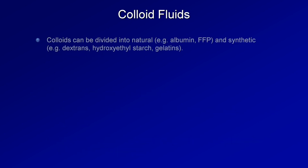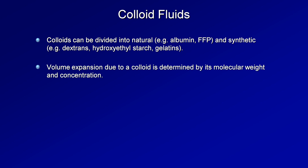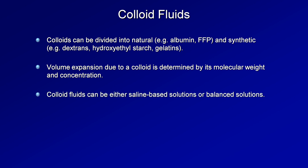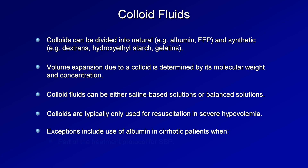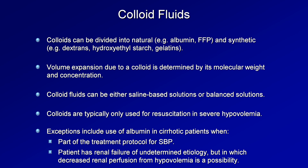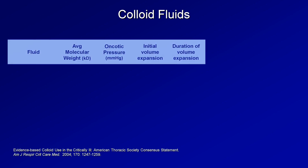Moving on to colloids — colloids can be divided into natural colloids such as albumin and FFP, and synthetic colloids such as dextrans, hydroxyethyl starch, and less commonly, gelatins. Volume expansion due to colloid is determined largely by its molecular weight and its concentration. Colloid fluids can be either saline-based solutions or balanced solutions. While they are typically only used for resuscitation in severe hypovolemia, there are exceptions — including use of albumin in cirrhotic patients as part of the treatment protocol for spontaneous bacterial peritonitis, and when the cirrhotic patient has renal failure of undetermined etiology. When comparing different colloids, it's more useful to compare average molecular weight, oncotic pressure, initial volume expansion as a percentage of the volume infused, and the average duration of volume expansion.